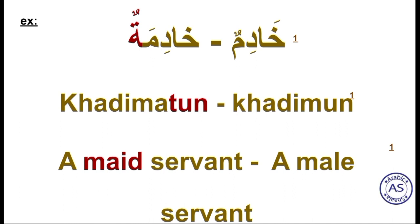Khadimun — a male servant. इसको अगर हमें female बनाना है, तो इसके last में symbol of feminine, round-ta यानि At-ta-ul-Mudawara add करेंगे। Last letter meem का symbol फथा हो जाएगा: Khadima, और फिर symbol of feminine add होगा — तुन। तो Khadimun से Khadimun: a male servant, और Khadimun: a female or maid servant।